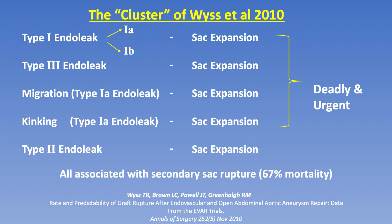Now that you've seen these ways of correcting type 2 endoleak, I want to remind you that the key dangerous ones — type 1 endoleak, type 3, migration, kinking — are ones every practicing endovascular surgeon is capable of correcting and it is urgent. So when sac expansion is occurring, we need to move quickly. Type 2 endoleak with sac expansion is not as common, and frequently type 2 endoleak doesn't have sac expansion — perhaps those are less serious. But those that do have sac expansion require the full armamentarium of techniques to correct them.